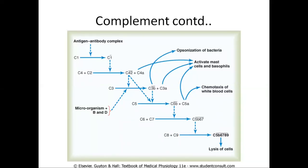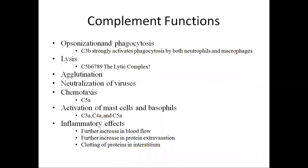The functions of the complement system: it is involved in opsonization of bacteria, that is phagocytosis. C3b strongly activates phagocytosis by both neutrophils and macrophages. C5b6789 is the lytic complex involved in lysis of cells. C5a is involved in chemotaxis of WBCs. C3a, C4a, and C5a are involved in activation of mast cells and basophils. It also involves neutralization of viruses and agglutination, resulting in increased blood flow, increased protein extravasation, and clotting of proteins in the interstitial fluid and tissues.